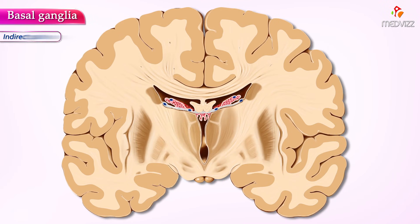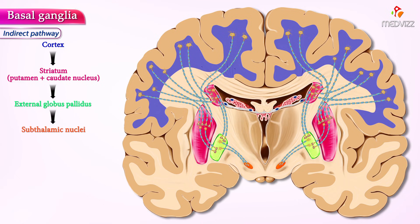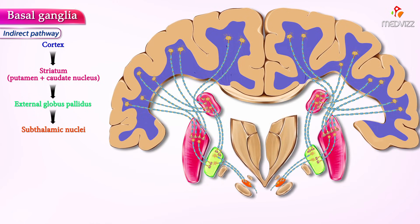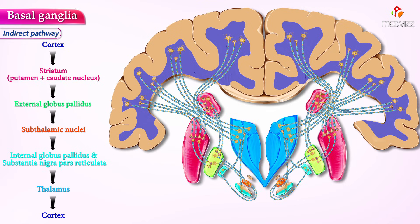Now let's look at the indirect pathway. The indirect pathway also begins in the cortex and proceeds as follows: from the cortex to the striatum, then to the globus pallidus externus, further to the subthalamic nuclei, then back to the globus pallidus internus and substantia nigra pars reticulata, eventually terminating in the thalamus and back to the cortex. This circuit is inhibitory, meaning it inhibits movement — unlike the direct pathway, which promotes movement.